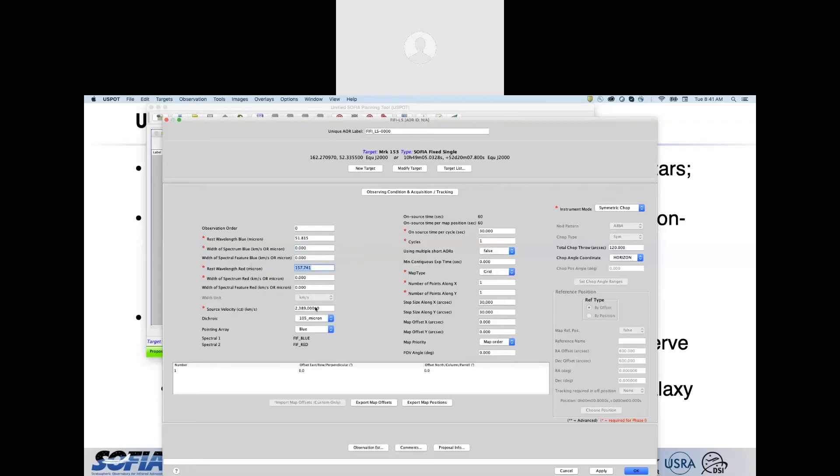For 52 micron, we're actually going to want to use the 130 micron dichroic. That gives more sensitivity at 52 microns than the 105 does. We don't technically have to set that now, but we may as well. On-source time per cycle is 30 seconds. We want to leave that as it is. But we said we want 36 minutes. So at 30 seconds per cycle, that's going to take 72 cycles to get there. And we're not using multiple short AORs. That's if you have lots of different AORs that can be used to not get dominated by the fixed overhead, which is applied to each AOR.